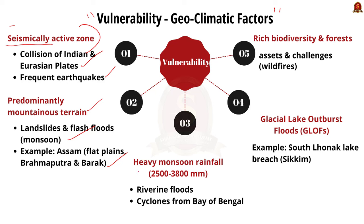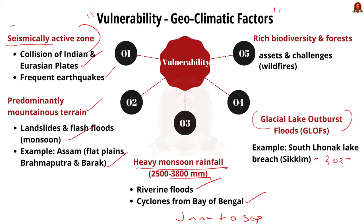Third, the region experiences heavy rainfall during the monsoon — an average of 2,500 mm to 3,800 mm annually, predominantly during the southwest monsoon from June to September — leading to river floods. Cyclones from the Bay of Bengal also exacerbate flood risk. Fourth, due to proximity to the Himalayan ranges, the region is prone to floods from glacial lake outburst events, such as the recent breach of the South Lhonak Lake causing floods in Sikkim. The rich biodiversity and extensive forest cover also pose challenges during wildfires and forest-related hazards.